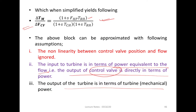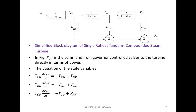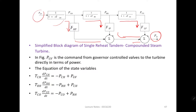To summarize the simplified block diagram: steam enters, the high pressure turbine generates its fraction of power, then after a time delay the intermediate pressure turbine generates its fraction, then through the crossover piping the low pressure turbine generates its fraction. All three power outputs are summed to give the total mechanical power output. That is all about the steam turbine model; in the next lecture we will discuss about the governor.